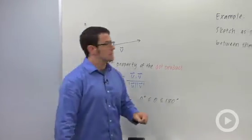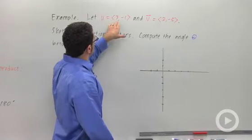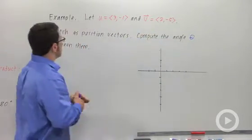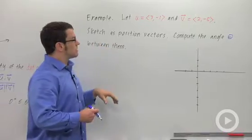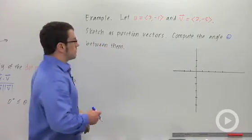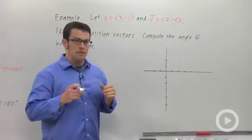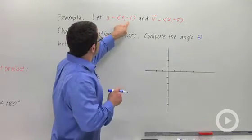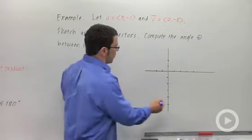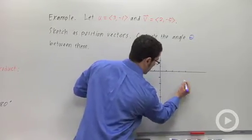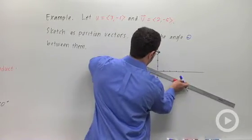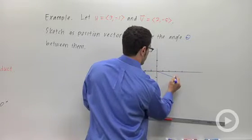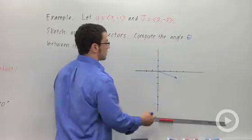Let's see how this works. Here's an example. Let u equal (3, -1) and v equal (2, -5). Let me first sketch these as position vectors, and then I'll compute the angle between them. Recall that when you sketch a vector as a position vector, you're putting its initial point on the origin. So (3, -1) will be the terminal point, and my vector u is right here.